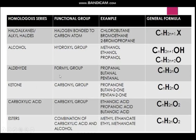Then we have ketone, whose functional group is called the carbonyl group. Examples are propanone, butanone, and pentanone - the suffix becomes the suffix of the chemical names. Ketone has the same general formula as aldehyde, but the difference is that the double-bonded oxygen is on the central carbon atom, meaning the carbon with the double-bond oxygen must be positioned between other carbon atoms.